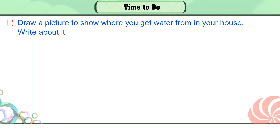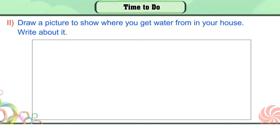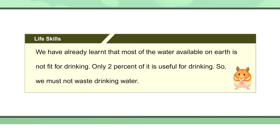Draw a picture to show where you get water from in your house and write about it. Life Skills: We have already learnt that most of the water available on earth is not fit for drinking. Only 2% of it is useful for drinking.